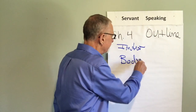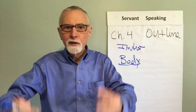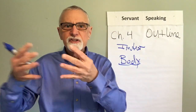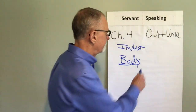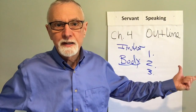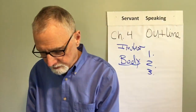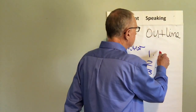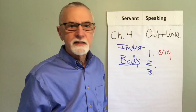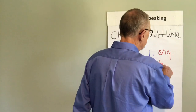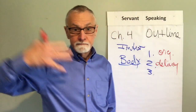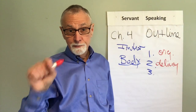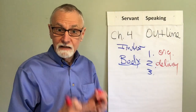Then we have what's called the body of the speech. The body contains the points that support the main idea expressed in the introduction. These are the sub-points. Let's say we have three of them. For our speech, let's say an outline is critical for organization — for organizing the speech. An outline is also critical for delivery; we need an outline to deliver from. That's called extemporaneous speaking, and it's the primary way you want to learn to do speeches — to have an outline and speak from it.